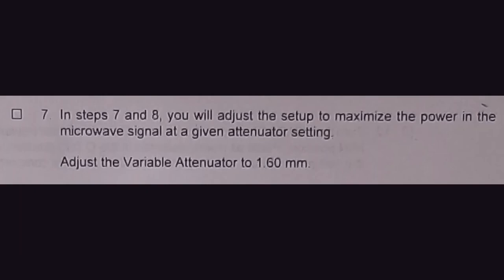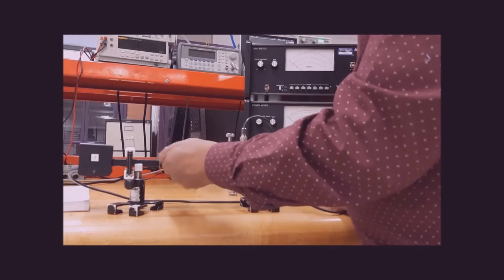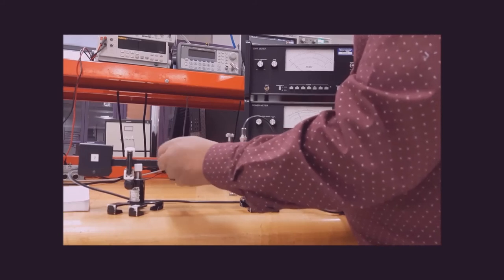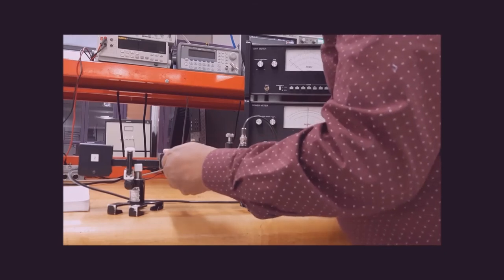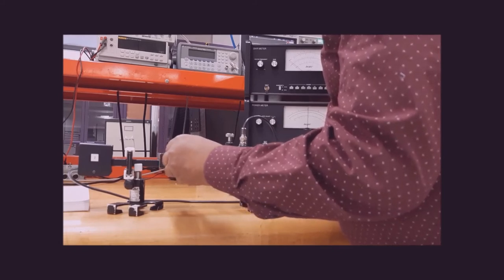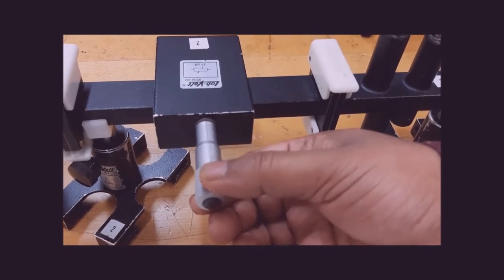We need to set the variable attenuator to 1.6 mm. It was initially at 11 mm, so pull it all the way out, then move one full round — that is 0.5 mm — then another round for 1 mm, another for 1.5 mm, and then 10 divisions on the circular scale for 0.1 mm more. That gives us 1.6 mm.